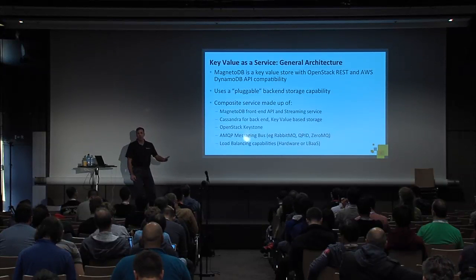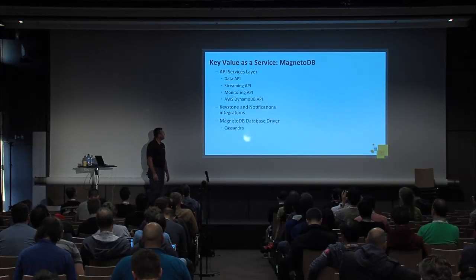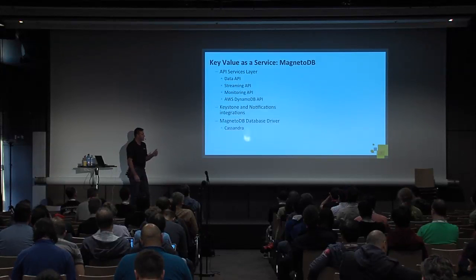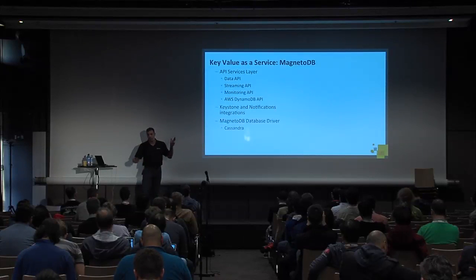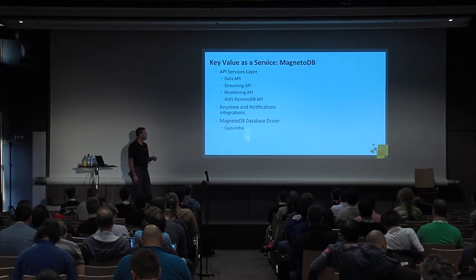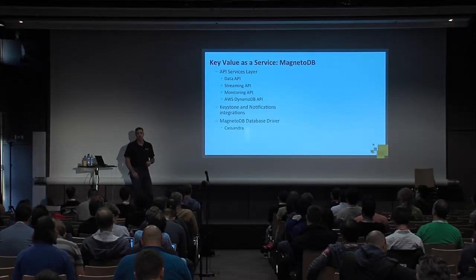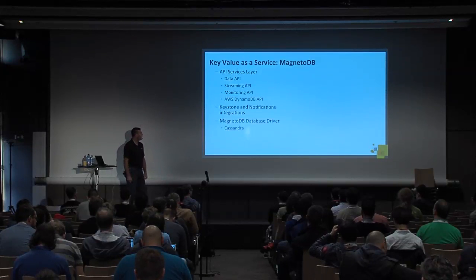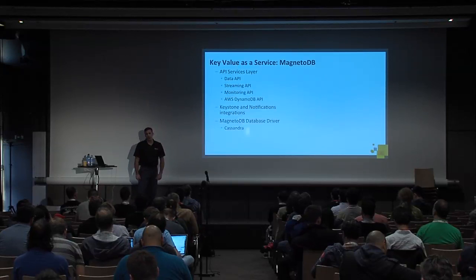You need some load balancing capabilities, either hardware or HAProxy or a solution to that effect. MagnetoDB specifically, in the API services, has a data API, a streaming API, and a monitoring API, which is interesting because you can hook that into Ceilometer if you'd like — injecting MagnetoDB information into your Ceilometer infrastructure, or you can just inject it into your RabbitMQ bus and something else can deal with it. It's up to you how you want to do that integration. And obviously there's the DynamoDB API that goes along with that. The Keystone and Notifications integration is part of that monitoring API solution.